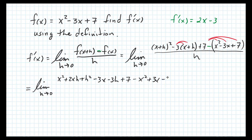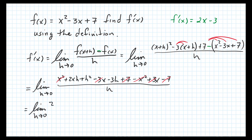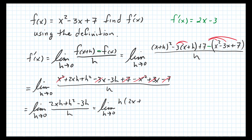Distributing the negative 1 gives minus x squared plus 3x minus 7, all still over h. Now we simplify: x squared and minus x squared cancel, negative 3x and positive 3x cancel, and 7 and negative 7 cancel. That leaves the limit as h goes to 0 of 2xh plus h squared minus 3h, all over h. I can factor out h from the numerator, leaving 2x plus h minus 3.